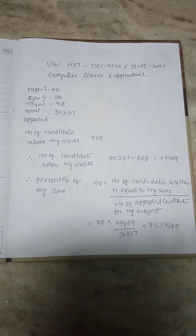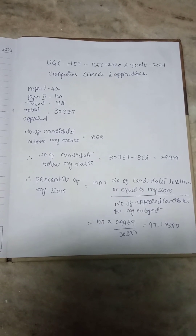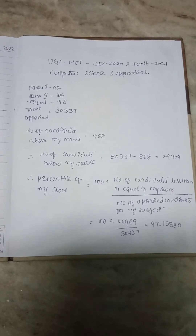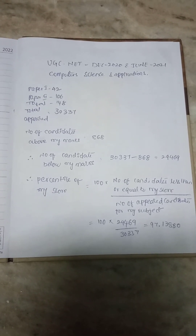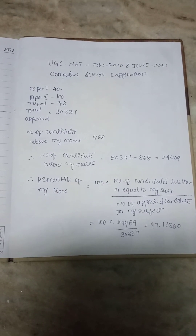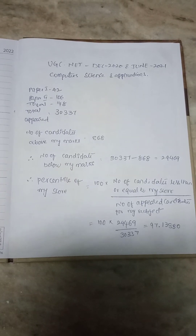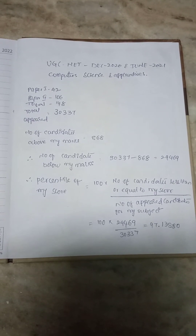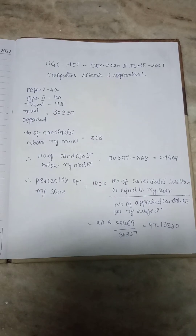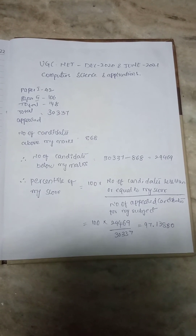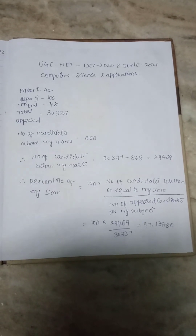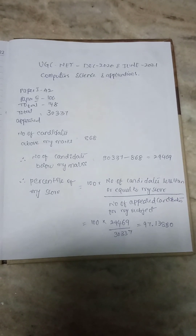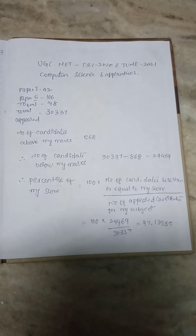The number of candidates above my marks is 868. You can see this number in the cutoff marks of the computer science and application subject. The number of candidates below my marks equals total appeared students minus candidates above my marks — that is 30,337 minus 868, giving 29,469. Applying the formula: 100 into 29,469 divided by 30,337.